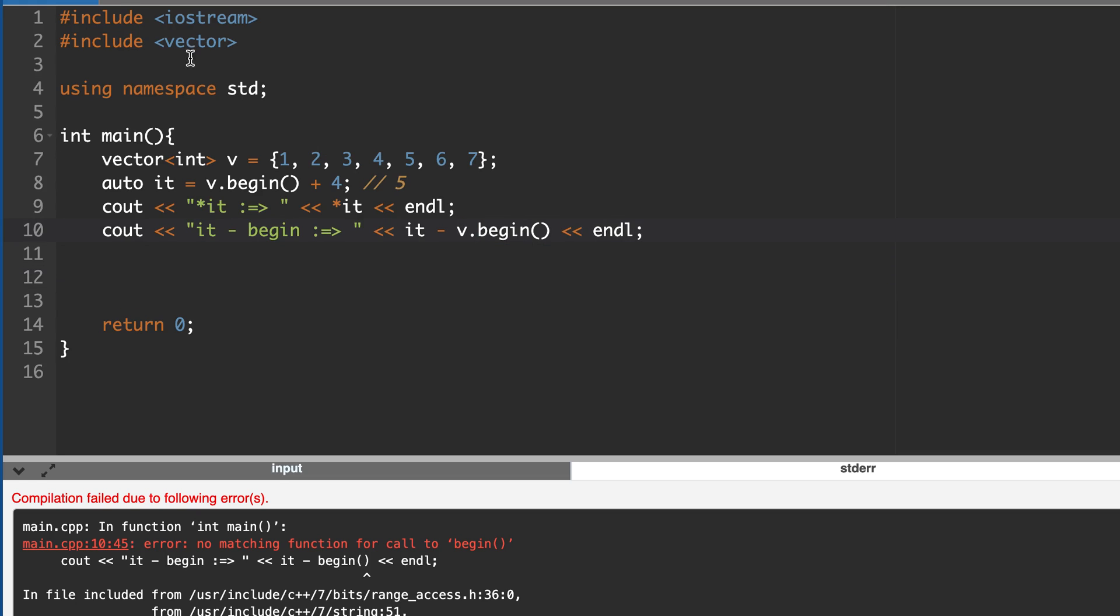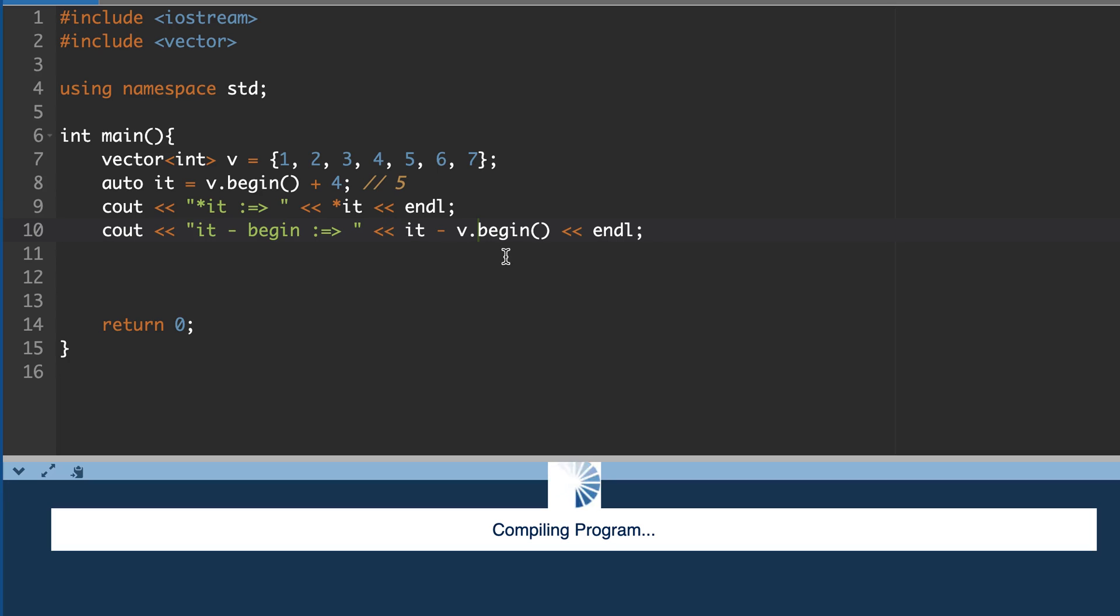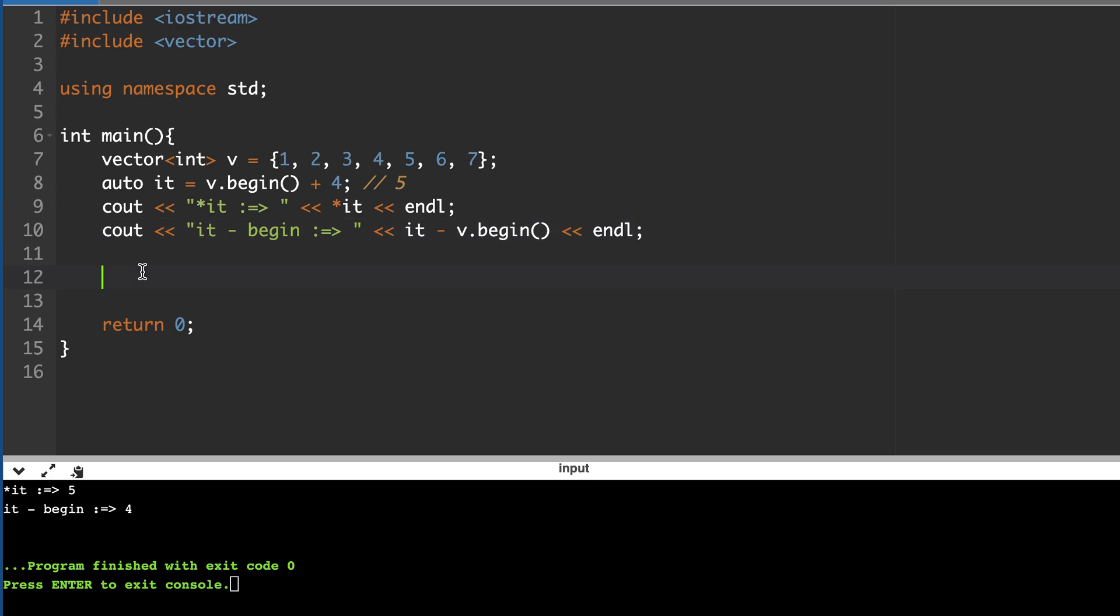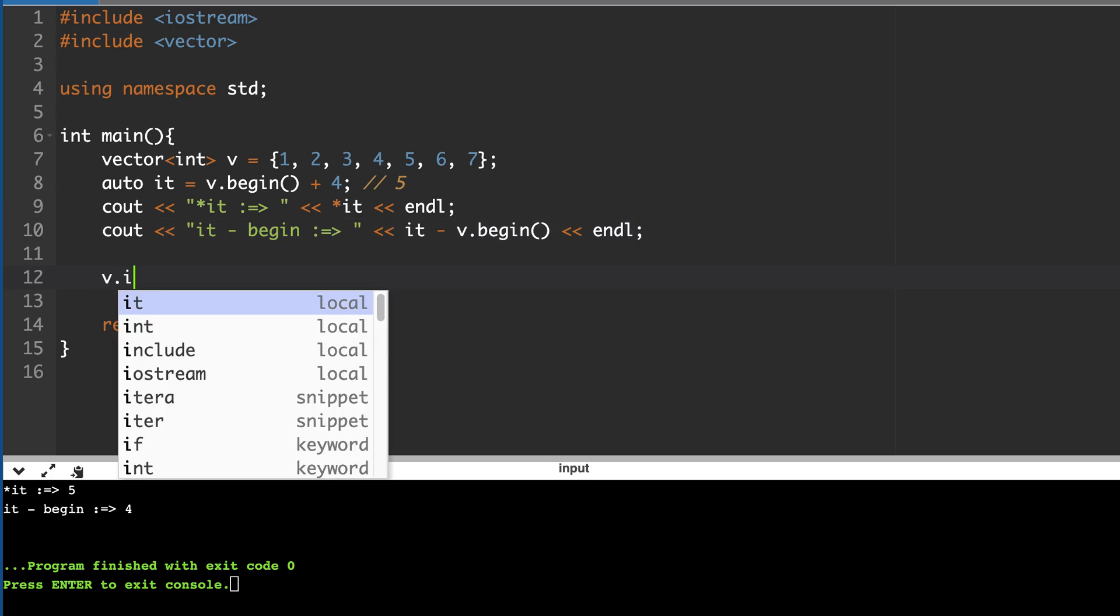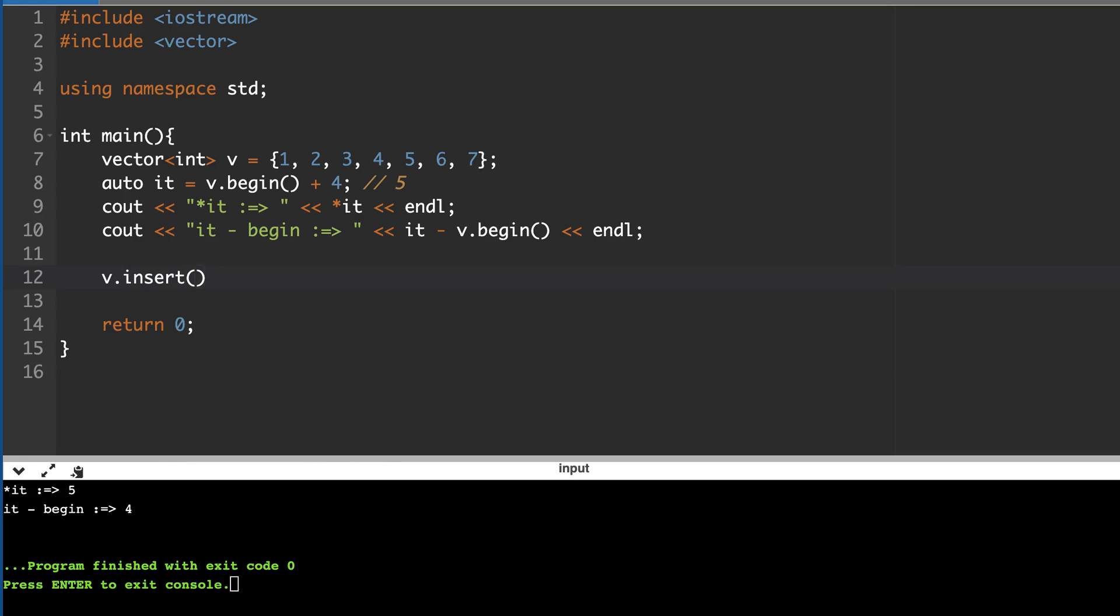Then we will do the insertion. So it should be v.begin(), not begin. So it's 4. Now let's insert something, so v.insert. And we will insert at this. So how insert works is that this iterator is pointing to 5, so we are passing this position. So it will insert before this. So we insert 100. So now this vector has become 1, 2, 3, 4, 100, 5, 6, 7. Its size has increased and 100 has been inserted here. Now what we will do, let's print these two again.